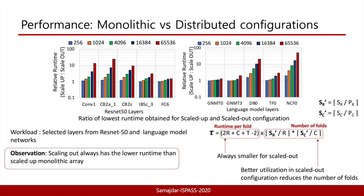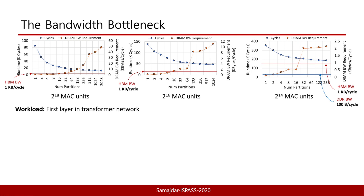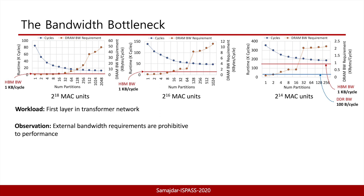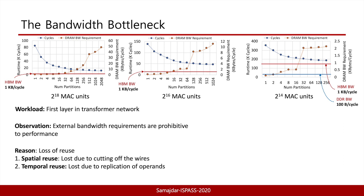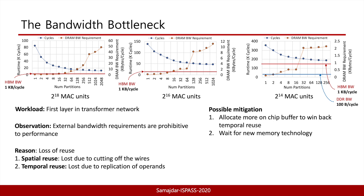Does this mean that scale-out is the clear choice? To answer this question we examine the demand for off-chip bandwidth. In three charts we show the cycles taken and the off-chip bandwidth demand as a function of number of partitions for different MAC counts. It is interesting to observe that bandwidth demand scales quickly with partitions and surpasses the capacity of state-of-the-art memory technologies like HBM, stifling the potential for further speedup. This is not surprising: increasing the number of partitions reduces connections among MAC units and requires data replication, lowering effective SRAM capacity. This leads to a dramatic drop in reuse and therefore efficiency. Possible mitigation can be found by improving reuse using larger buffers.